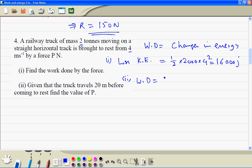Work done is equal to force times distance. So P times 20 is equal to 16,000. Therefore P is equal to 800 Newtons.